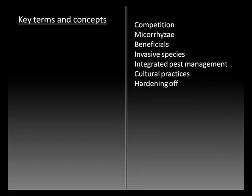Key terms and concepts we'll cover this week include competition, mycorrhizae, beneficial organisms, invasive species, integrated pest management, cultural practices, and care of plants — especially hardening off — to help them make the transition from a protected greenhouse environment out to planting in the field.